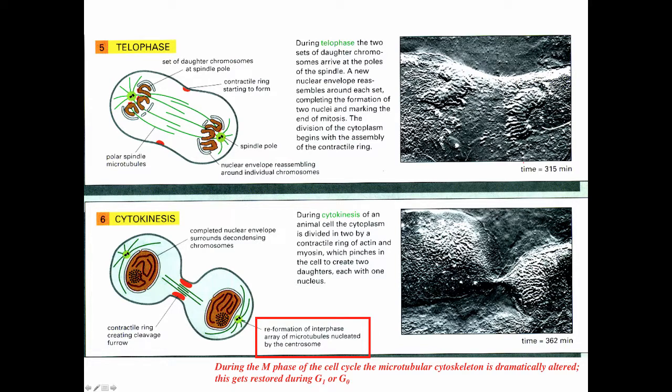I want to remind you that during the M phase of the cell cycle, the microtubular cytoskeleton is dramatically altered and that's going to get re-established once the chromosomes have divided and the nuclei have divided.